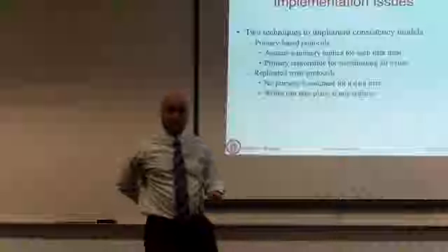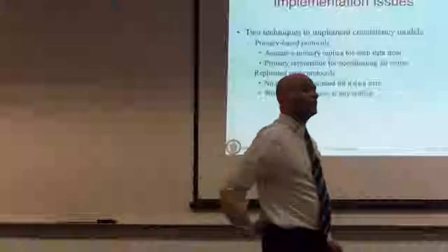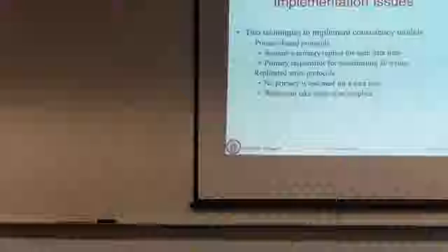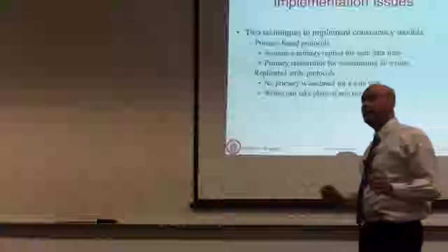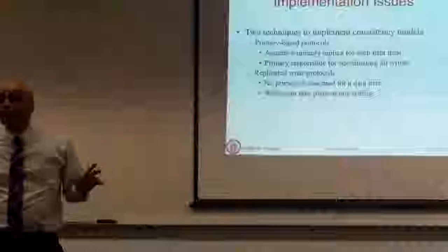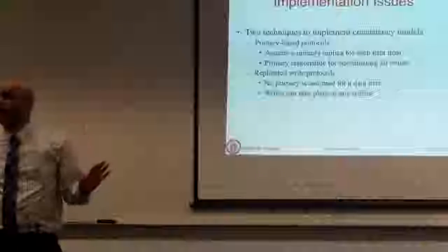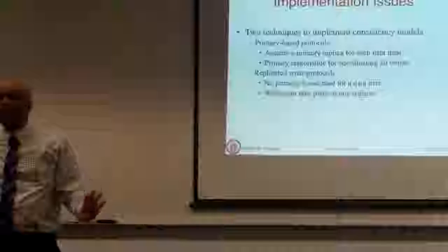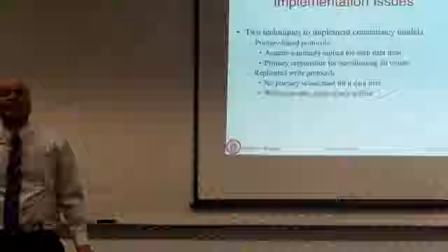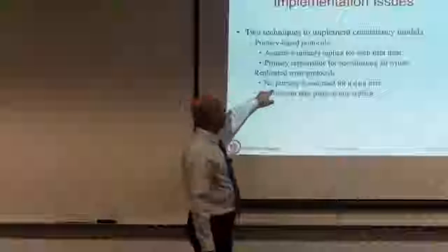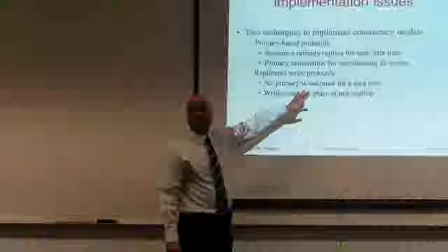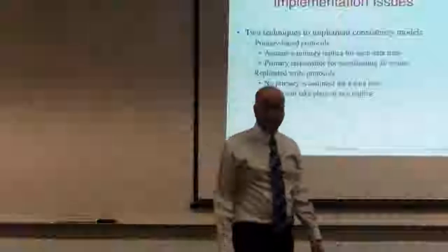The replicated write protocol, which we will also see today, does not make any assumption about a primary. All replicas are equal — there is no primary and secondary. So what that means is each write request, if you open a file and write to it and it is replicated, when you save that file, that write has to be sent to multiple replicas by your client, rather than being sent to only one primary which then propagates to secondaries.